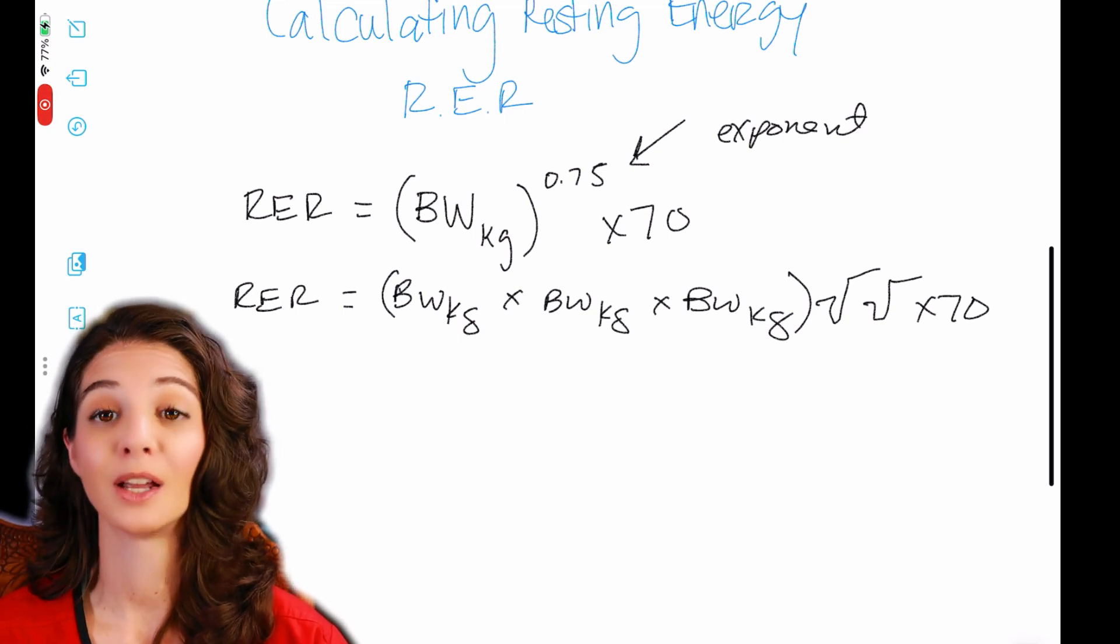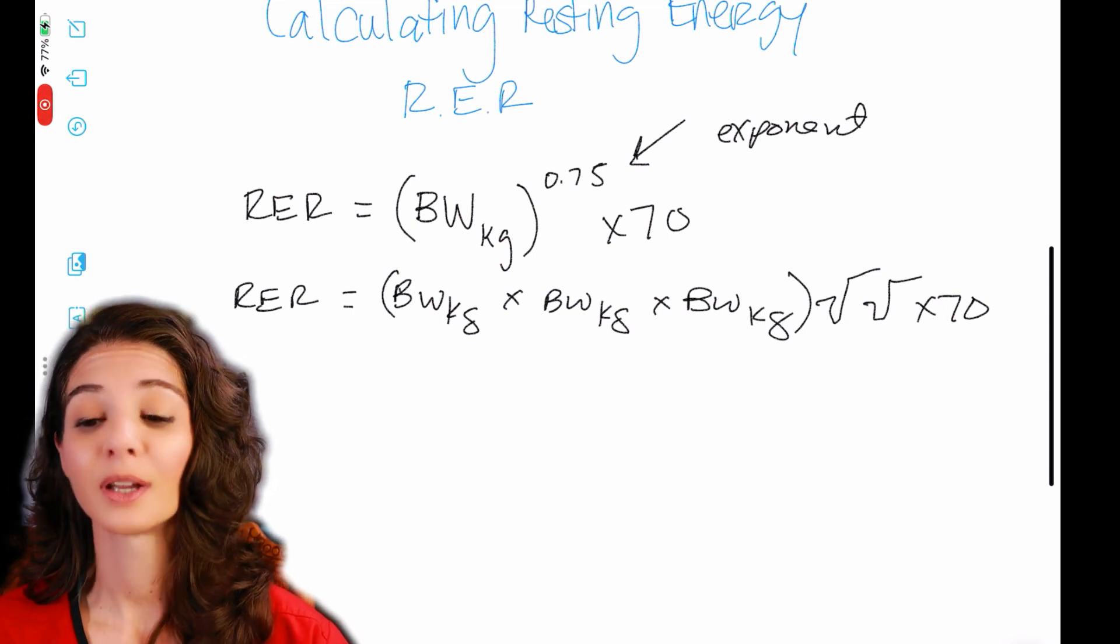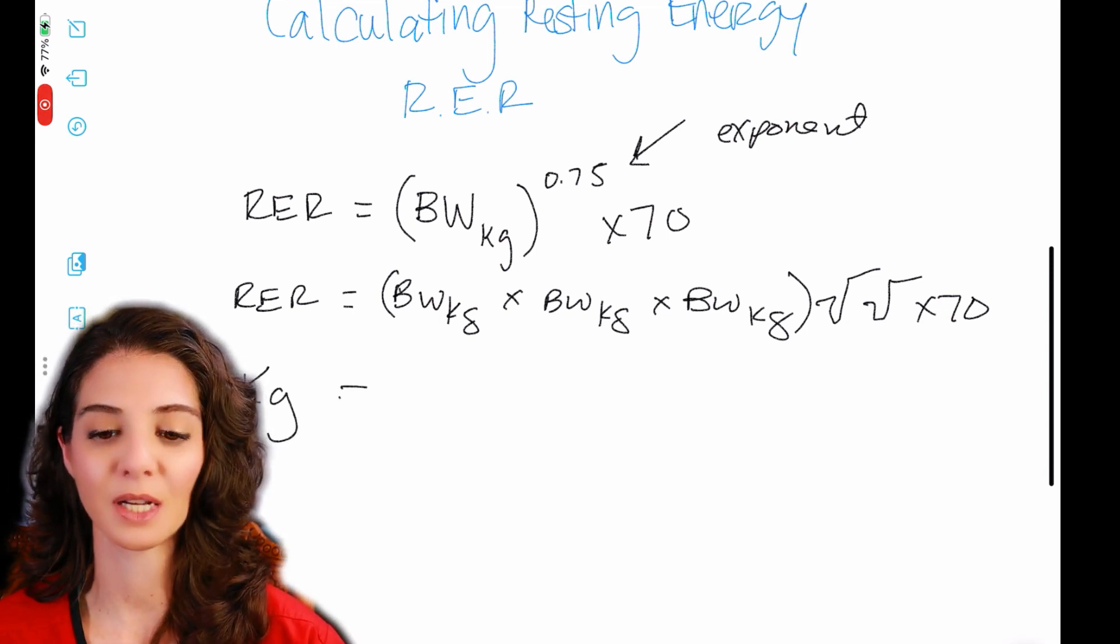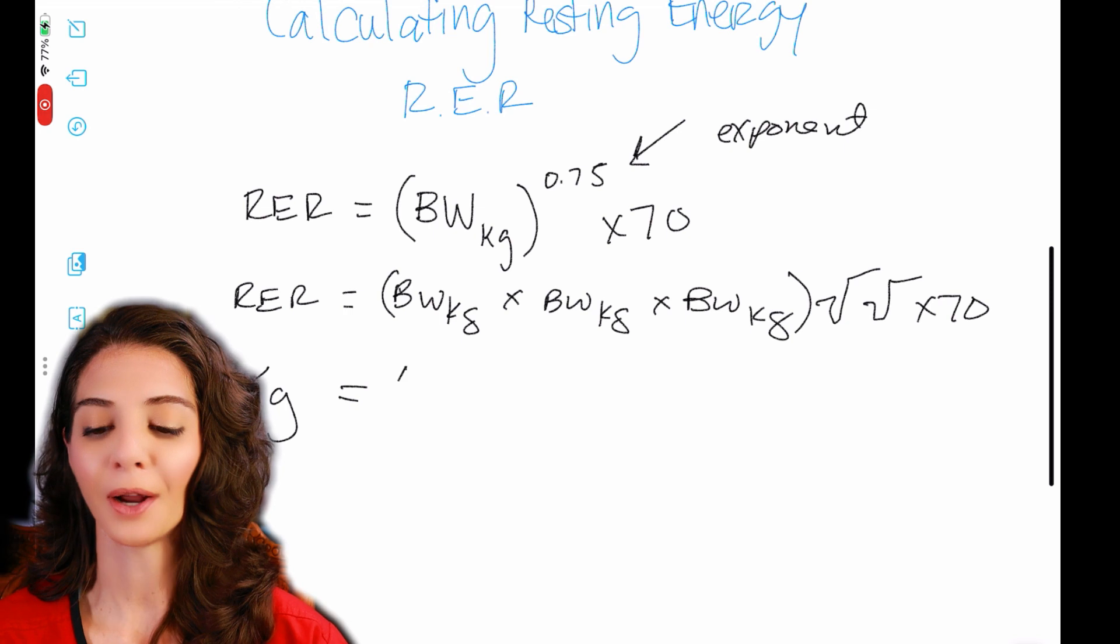You put it in your calculator just like that times 70. So body weight, body weight, body weight, square root, square root times 70. And that will give you the resting energy requirement. All right.